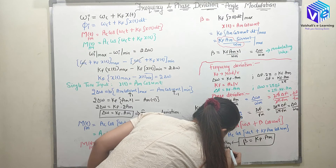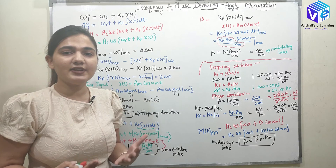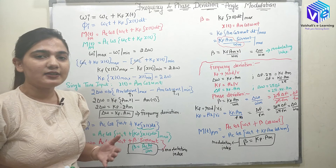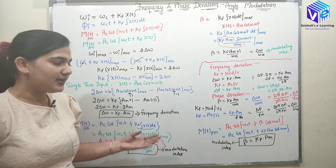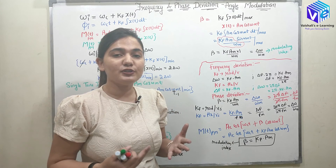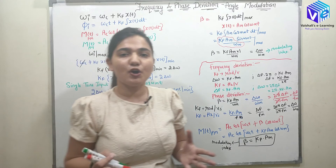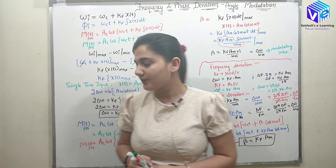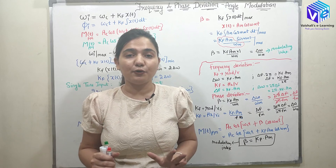According to the modulation index, we'll see the difference between phase modulation and frequency modulation in the upcoming video. The modulation index of FM is different from that of PM, and this limits the use of phase modulation. Phase modulation has practically infinite bandwidth; frequency modulation also has infinite bandwidth, but we can limit it because of the division by omega_m factor in the FM modulation index.